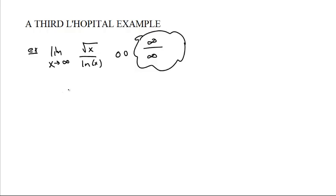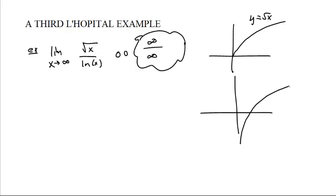Well, square root of x is going fairly slowly. Square root of x looks like this. And y equals square root of x. And the natural log of x goes up pretty slowly too. y equals ln of x. Which one is going slower?